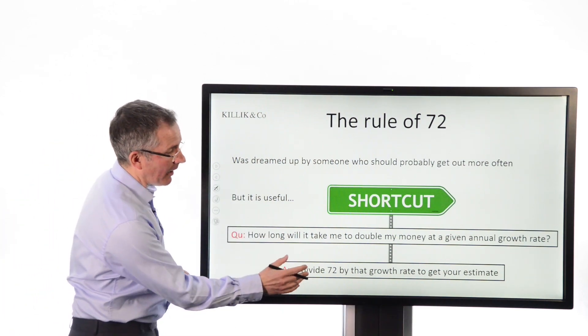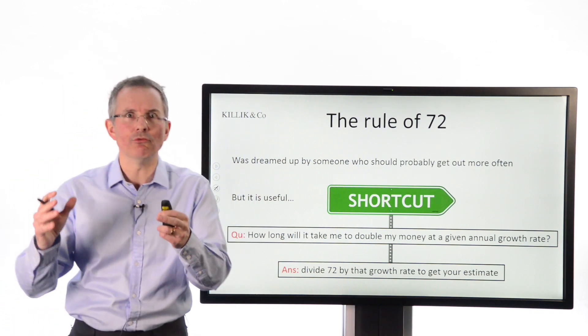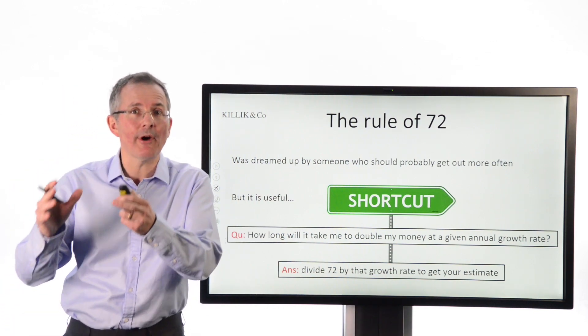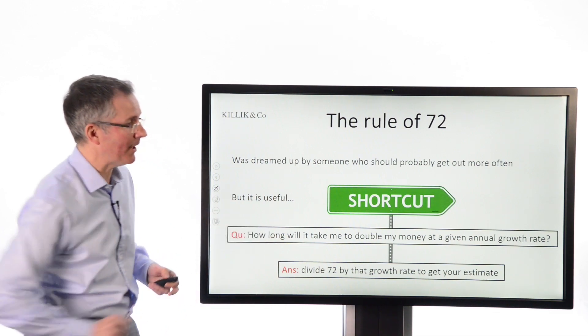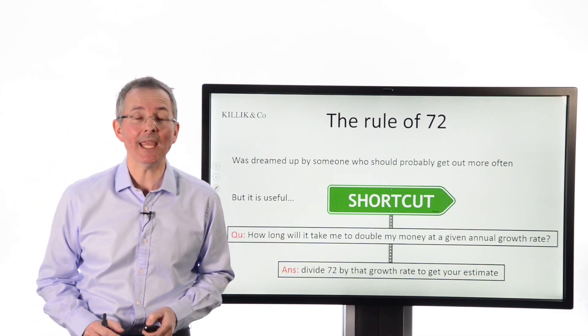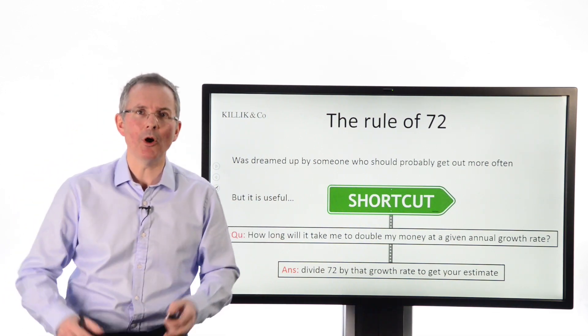In other words, if you divide 72, hence rule of 72, by the growth rate you've got in mind, you get an approximate estimate of how long it'll take you to double your money. Pretty neat. So how does that work? Let's have a quick look.